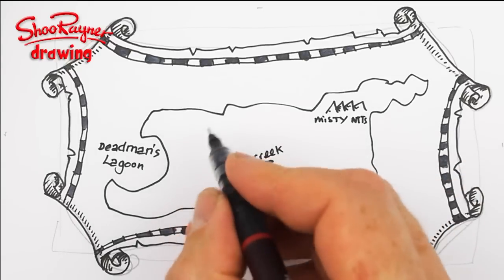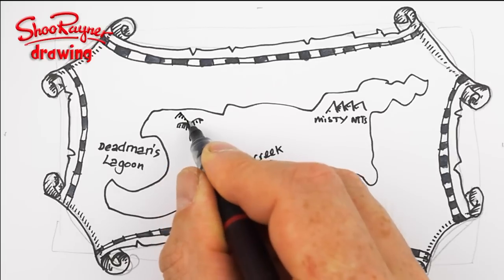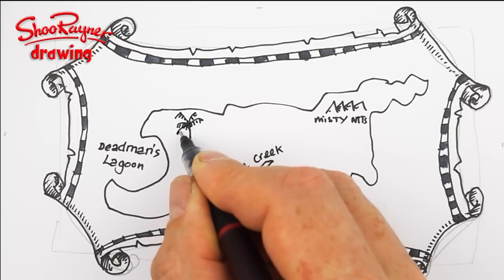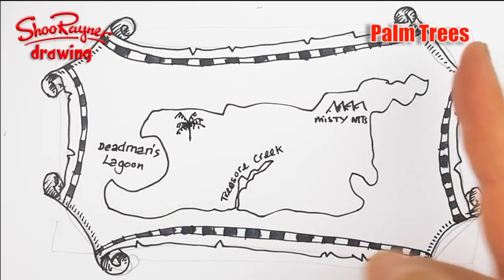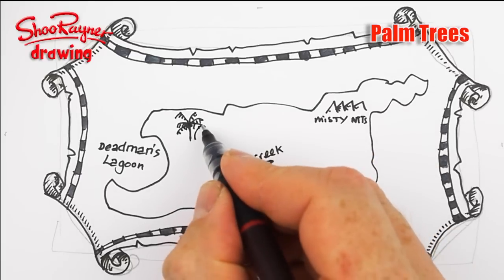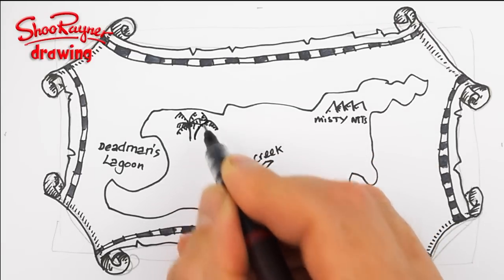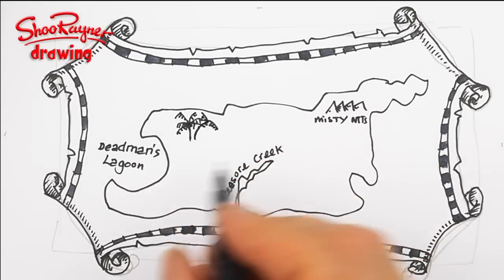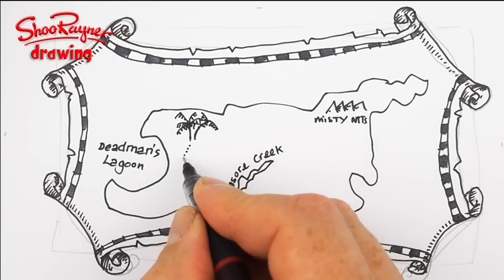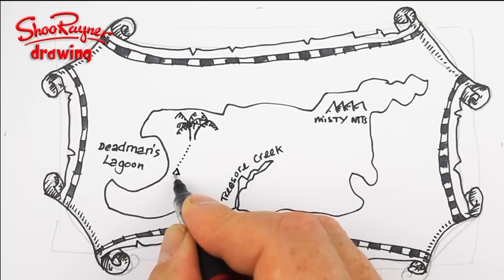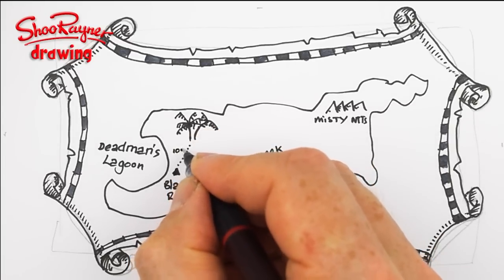Up here say misty mountains. And then you're probably going to want to have palm trees. I did a video on palm trees if you want to do beautiful palm trees — I'll put a link up here. And maybe another palm tree like that. And then maybe you need to go to black rock.